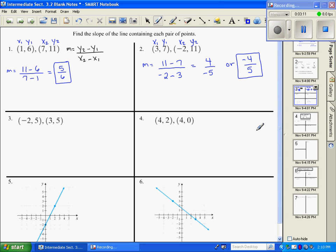So the slope is negative 4 fifths. You can leave the negative in the bottom or you can bring it to the top. Both of these represent a negative 4 fifths slope.